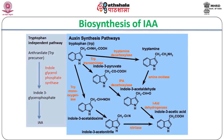Two pathways of IAA synthesis from the amino acid tryptophan have been identified. In one pathway, tryptophan transaminase activity synthesizes indole-3-pyruvic acid or IPA, that leads to indole acetaldehyde and then IAA. In the second pathway, tryptophan decarboxylase activity synthesizes tryptamine, which is oxidized by an amine oxidase to form indole acetaldehyde and then IAA.